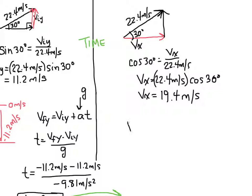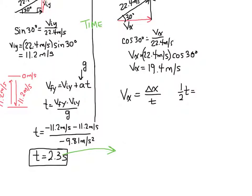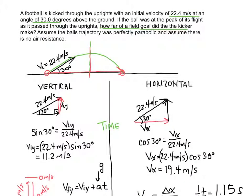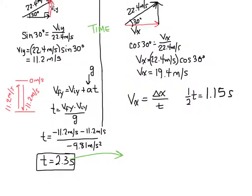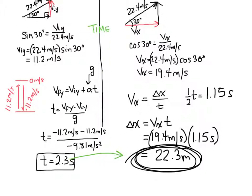The equation I use is velocity equals distance (delta x) over time. I know the velocity and I am going to use half of the total time: half of 2.3 seconds is 1.15 seconds, because I want the distance to the halfway point where the uprights are. Plugging in the numbers and solving for delta x gives a distance of 22.3 meters. That is how far this field goal was.